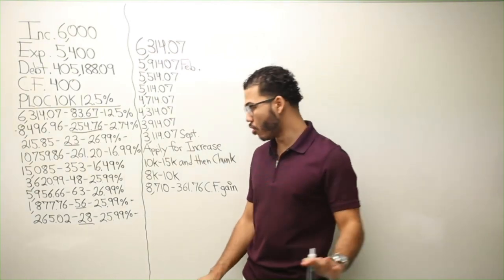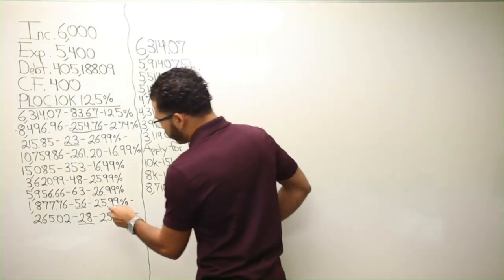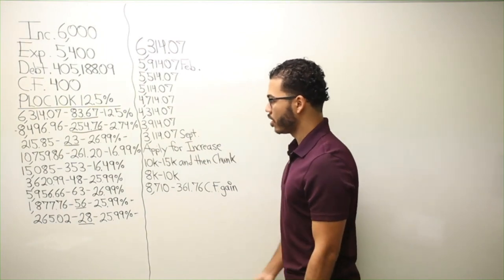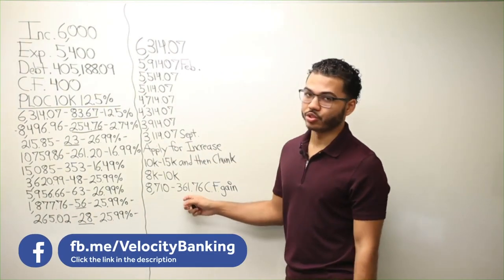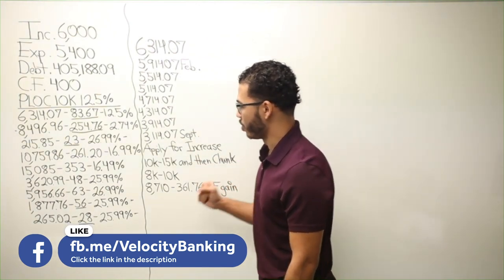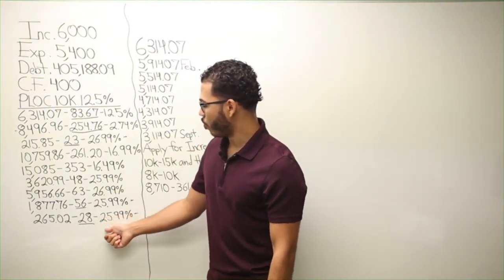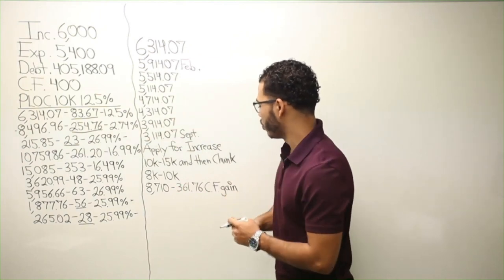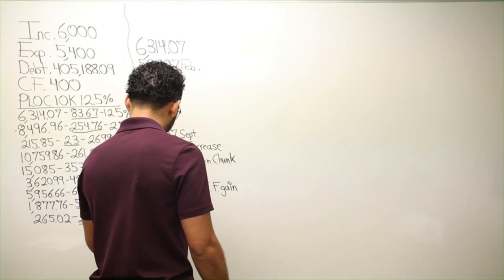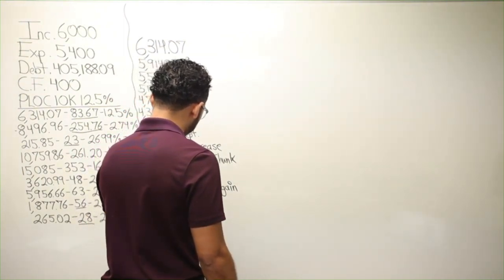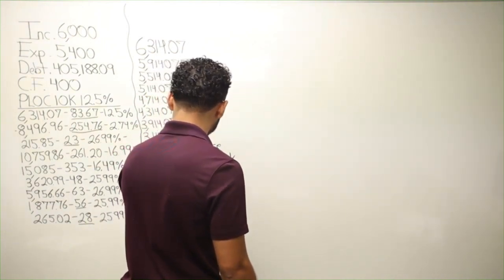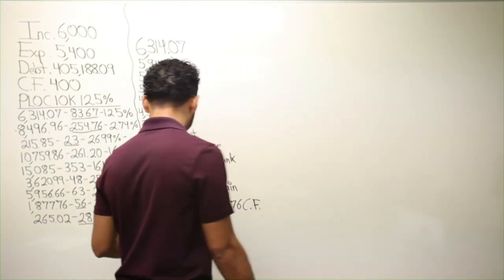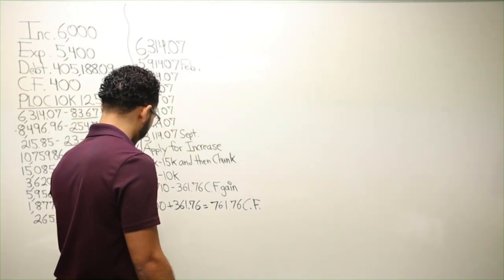I'm sure you can agree that with more cash flow, the faster you go — period. Even with the debt snowball concept, the more cash flow you have, the faster you go — there's no argument there. Sometimes people look at the interest rates you're being charged, which is reasonable, and I'll do the same with velocity banking. But cash flow is usually my top priority. So by September I'll wipe out four debts at once and get $361.76 in cash flow gain.